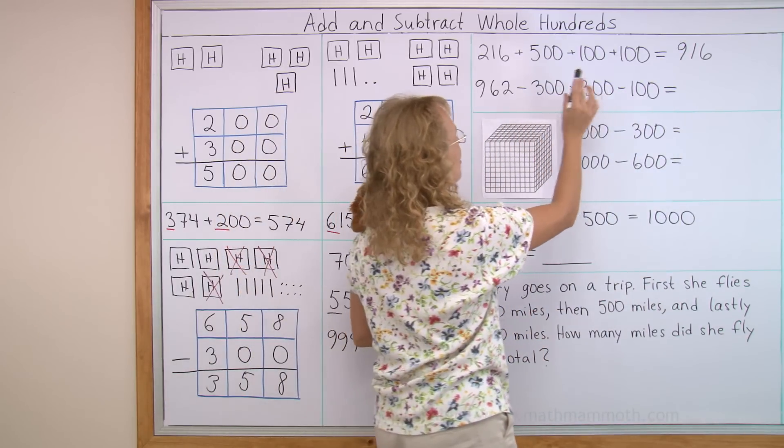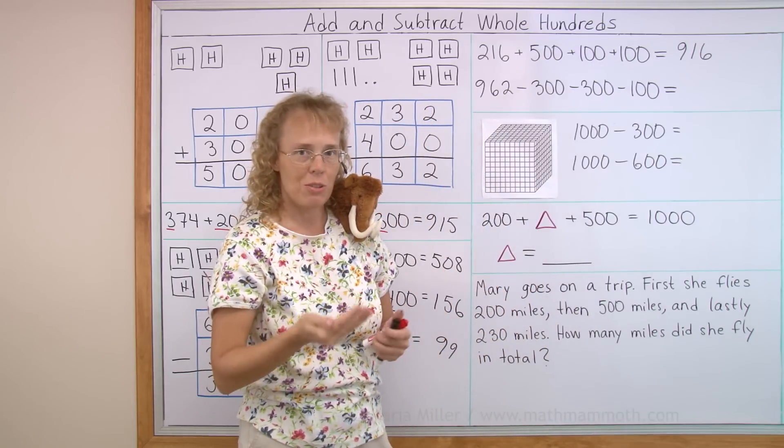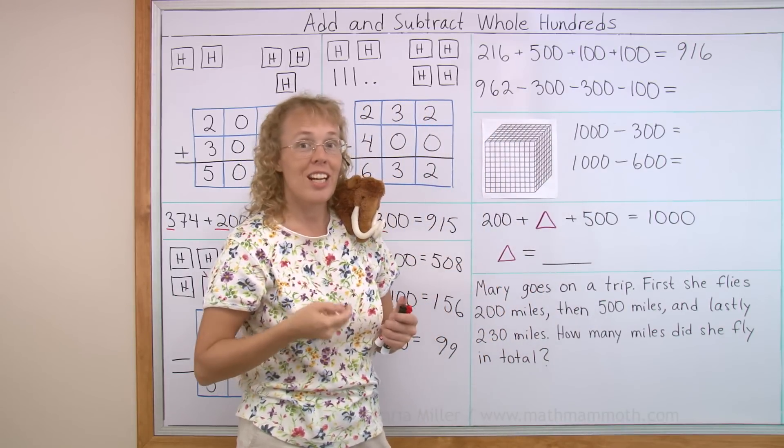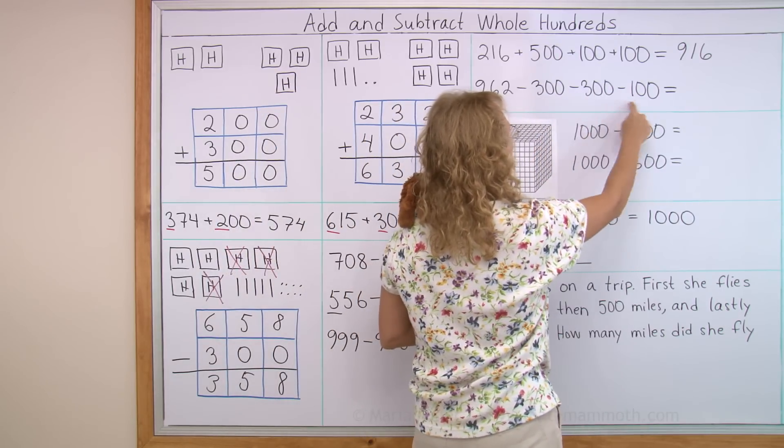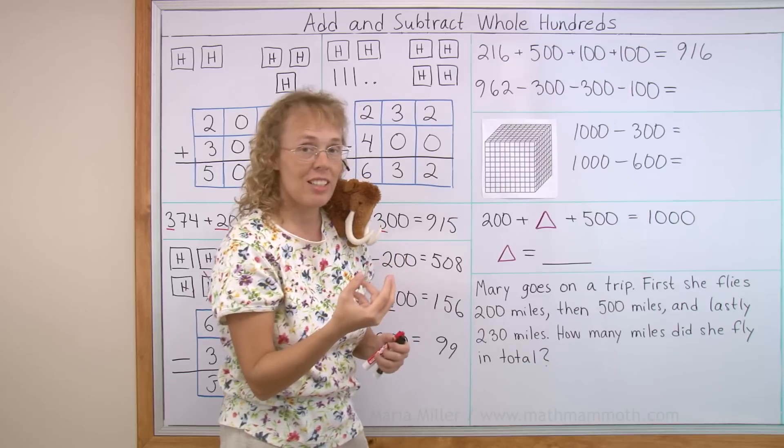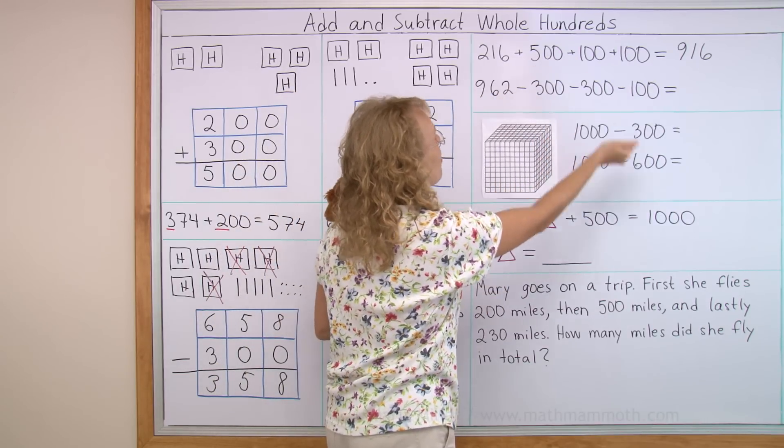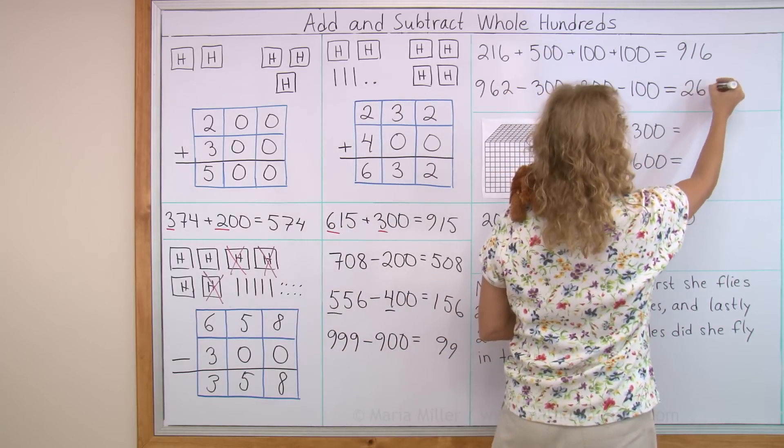962 minus 300 minus 300 minus 100. It's like I'm crossing out all those hundreds. So let me check first how many whole hundreds I end up crossing out. 300, 300, 100. This is a total of 700. So I just do 962 minus 700. And that should be 262.